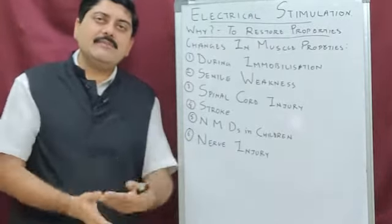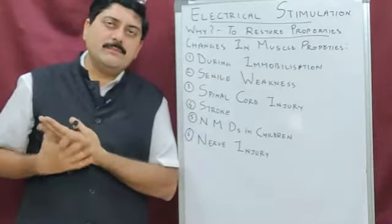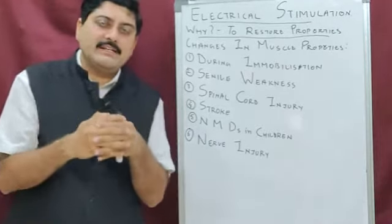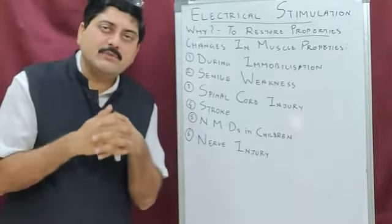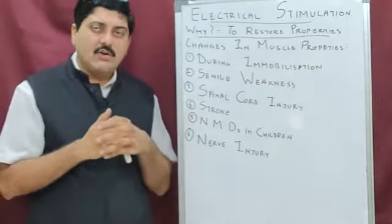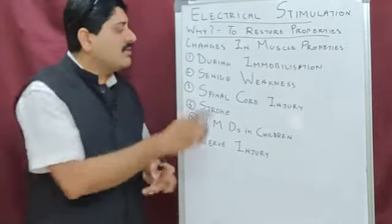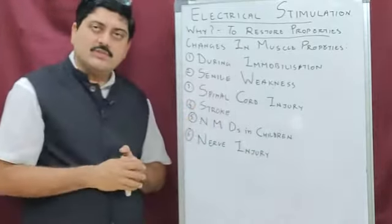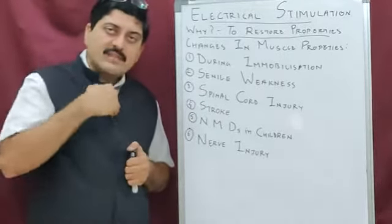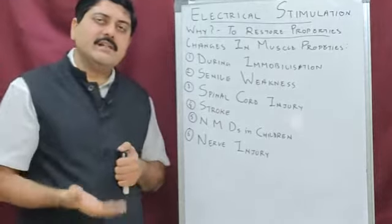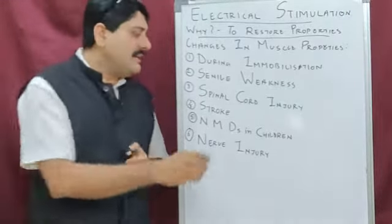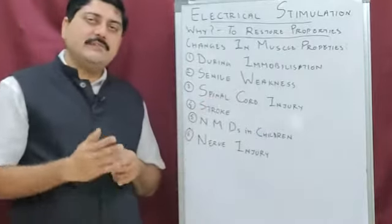If the muscle is immobilized in a shortened position, it tends to go into a contractile position. There is fibrosis in the muscle and it can go into contracture or a shortened position because of immobilization. At this point, to produce an artificial contraction in the muscle, we can use electrical stimulation.